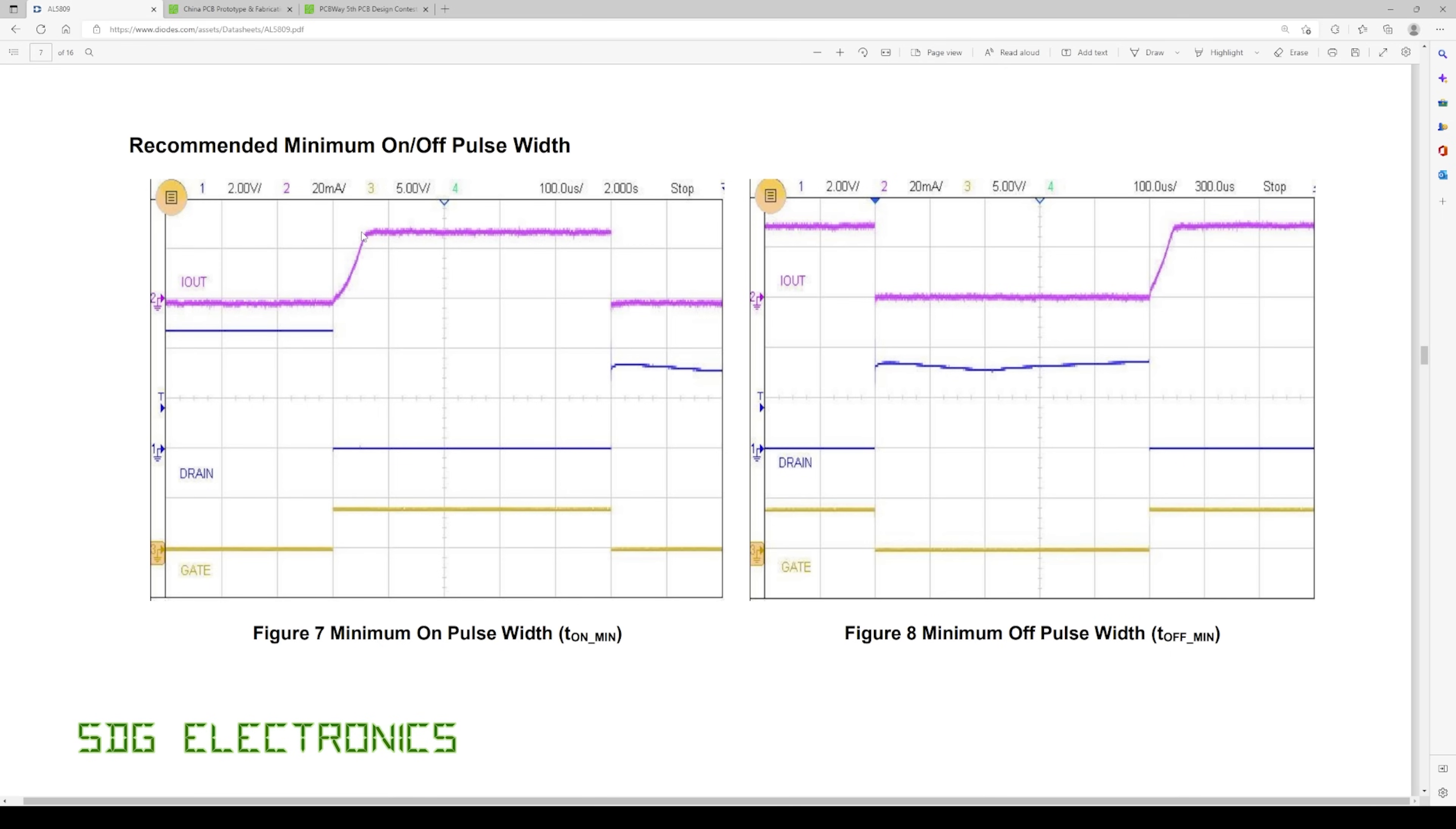I don't really see why they've said the minimum on pulse width should be all the way over here because by this point it's already regulated so we should be perfectly fine dimming below those numbers.